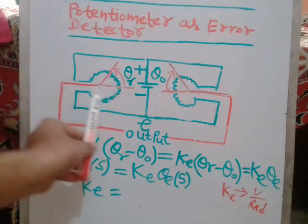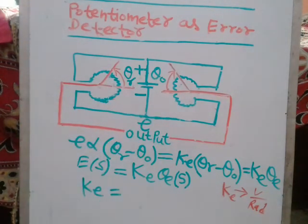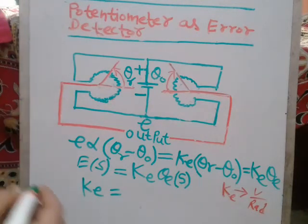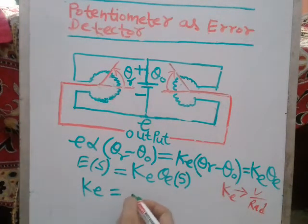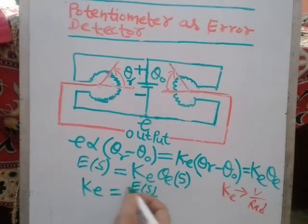This is a rotary potentiometer, not a linear potentiometer. From the relationship Es = Ke × theta_e, you can calculate Ke: the transfer function Ke is equal to Es divided by theta_e(s).